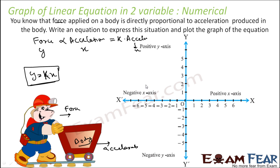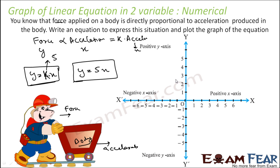To plot this graph, to plot this line, I need to have some constant value. Let's assume the constant k is equal to 5 — I can assume any value, like k equal to 3 or k equal to 4. So if k is equal to 5, my equation is y is equal to 5x, because to draw the graph I need the actual equation. So y equal to 5x is the equation I have.